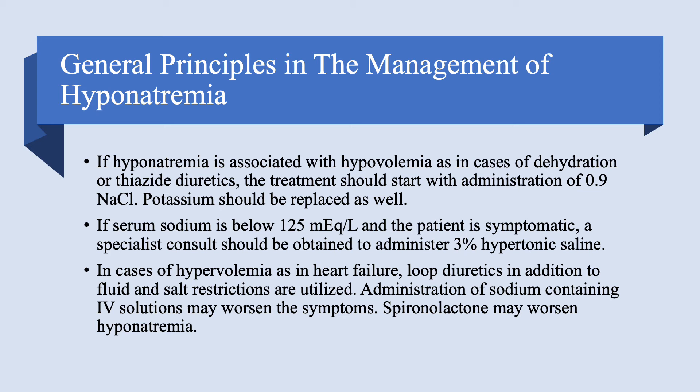For symptomatic hyponatremia below 125, you're going to give 3% hypertonic saline. You're not going to give 0.9% saline, you're not going to give tolvaptan, and you're definitely not going to do fluid restriction. You have to take action — and that action is a consultation and administration of 3% saline.